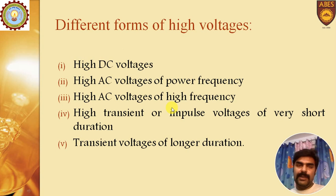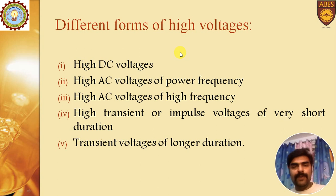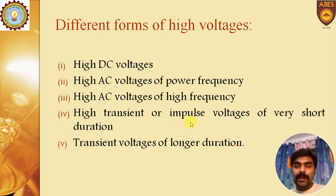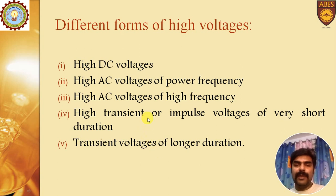The next question is: what are the different forms of high voltage? High voltage can be of the following types: high voltage DC, high voltage AC at power frequency, high voltage AC at high frequency, high transient or impulse voltage — where impulse voltage duration is very short — and transient voltage for longer duration.